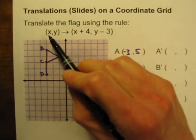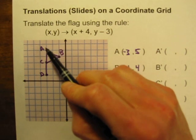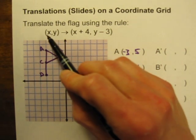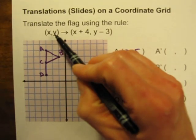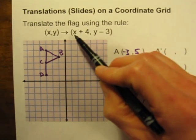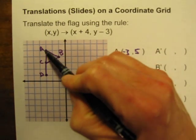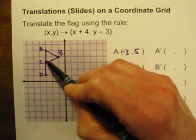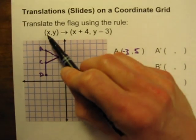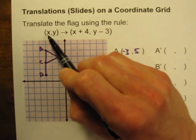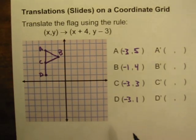Every point on this flag is going to be moved according to this translation rule: the point (x, y), in general any point (x, y), will become the point (x plus 4, y minus 3). That's going to be true for A, B, C, and D — really any point on this flag. We're going to add 4 to the x coordinate and subtract 3 from the original y coordinate.